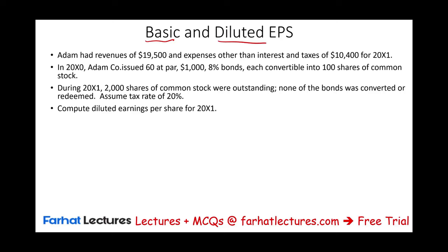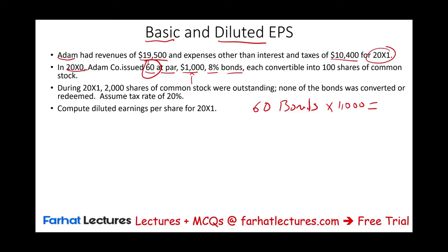We have Adam, who has had revenue of $19,500 and expenses other than interest and taxes of $10,420 in X1. In the prior year 20X0, Adam issued 60 at-par $1,000 8% bonds — that's 60 bonds at $1,000 each, so $60,000 of bonds outstanding paying 8% in interest.